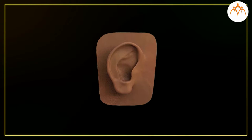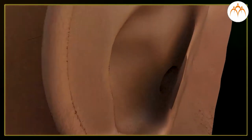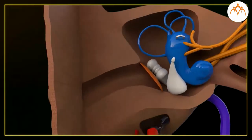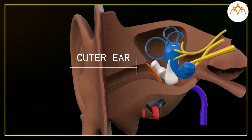The ear is an important organ of the human body. We hear sounds because of the ear. When sound waves fall on the eardrum, it vibrates. The ear can be divided into three parts.